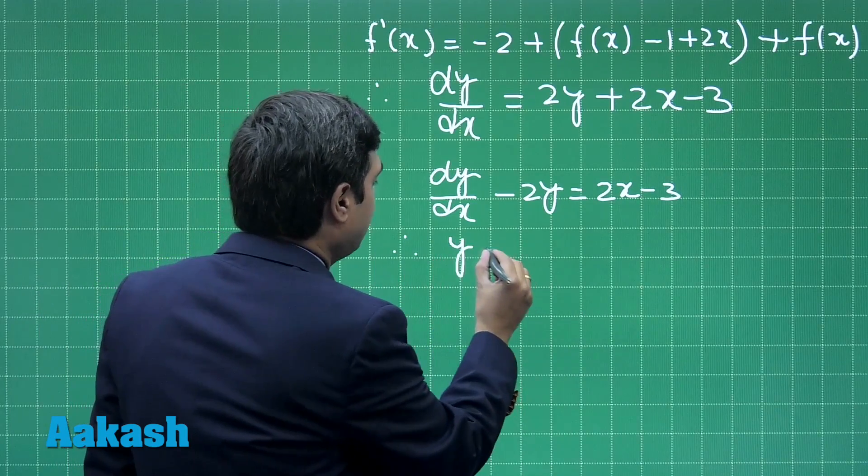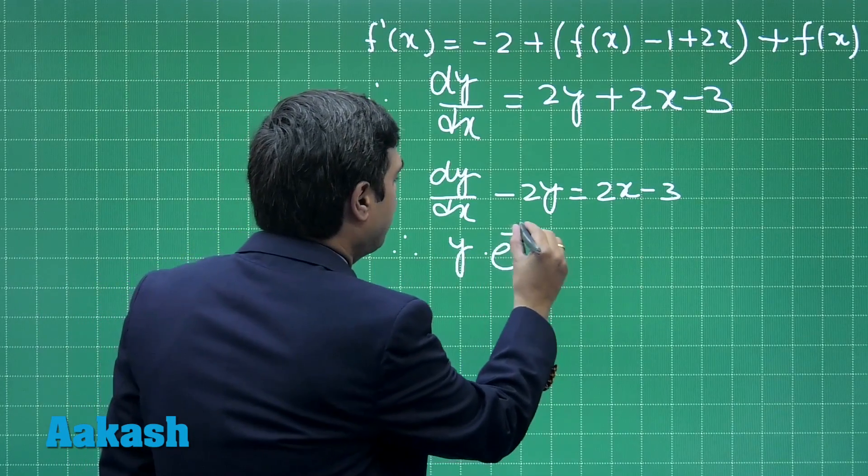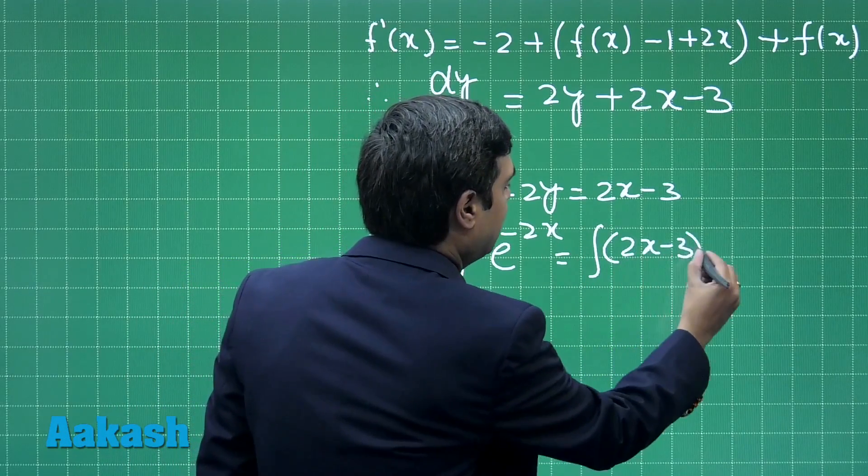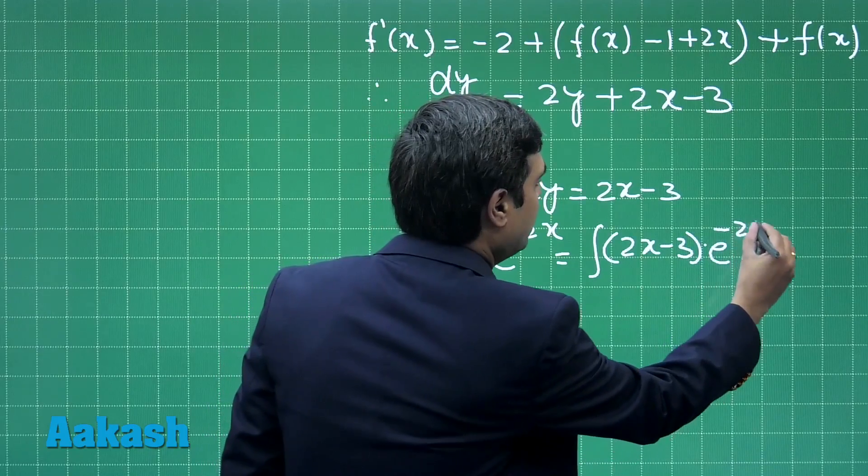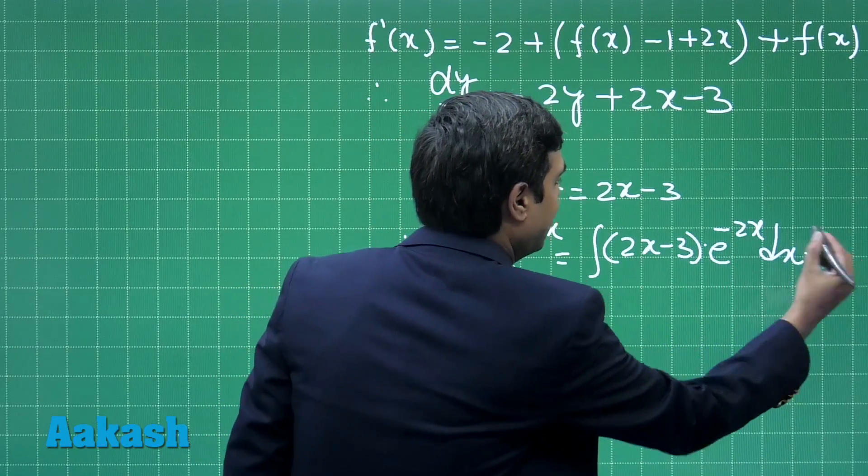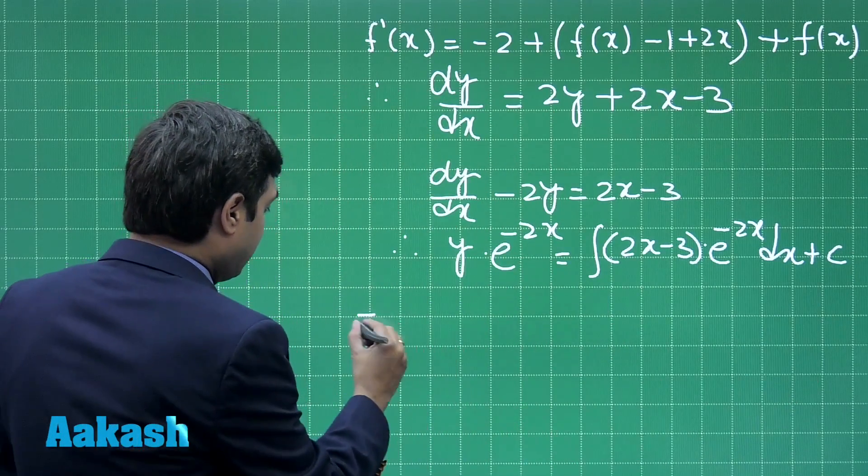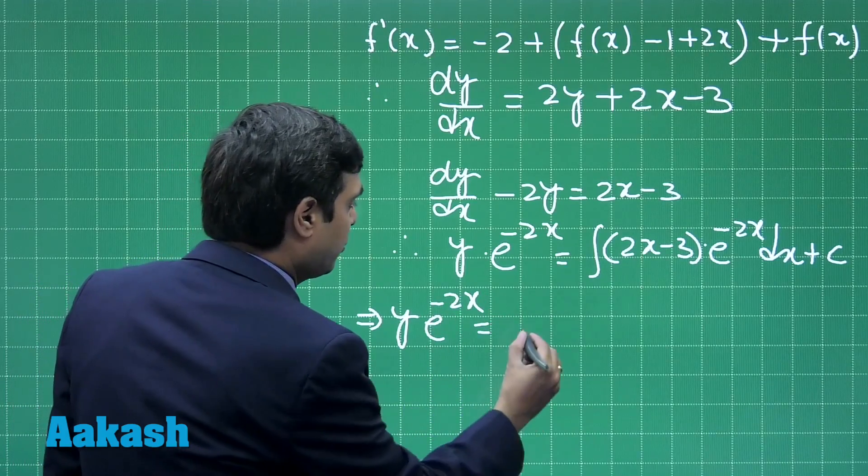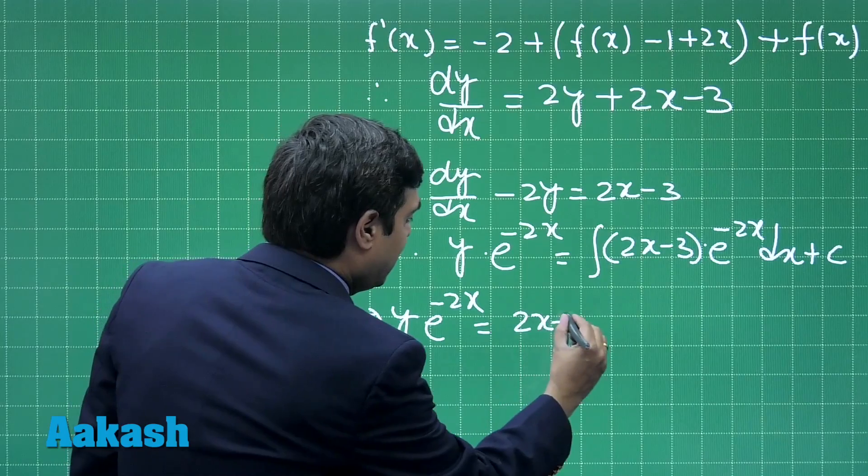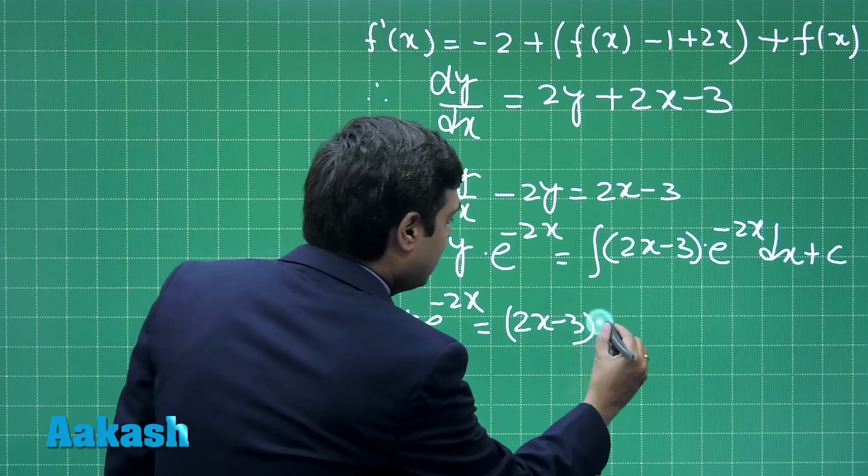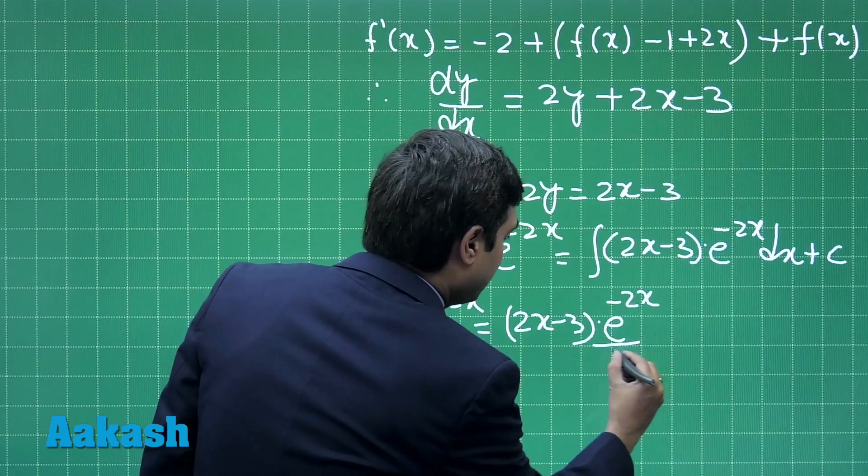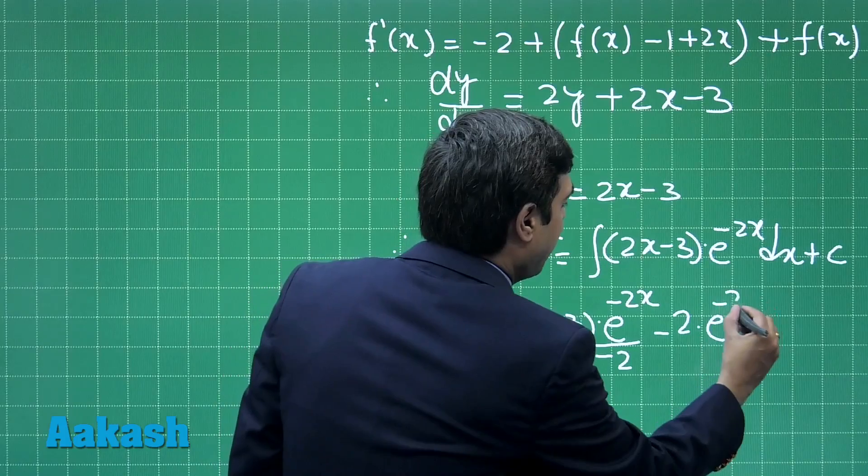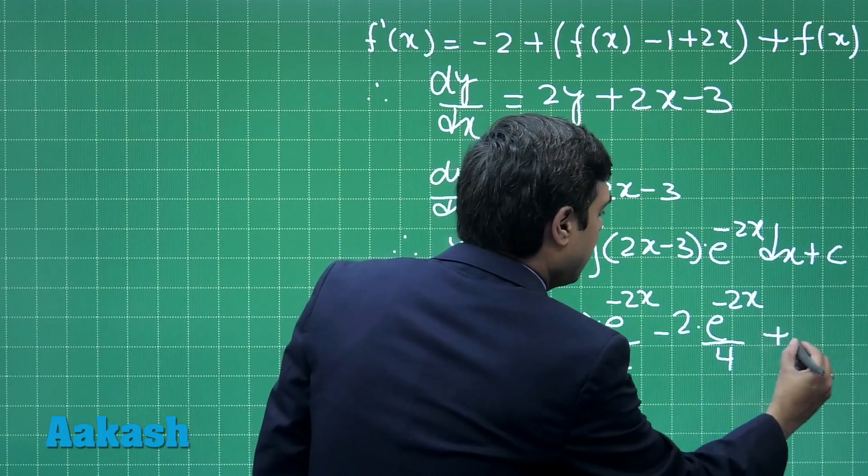Clearly, its solution is y times e^(-2x) is equal to integral (2x minus 3) times e^(-2x) dx, which equals (2x minus 3) times e^(-2x) upon minus 2, minus 2 times e^(-2x) upon 4, plus c.